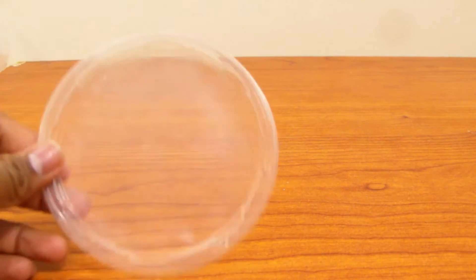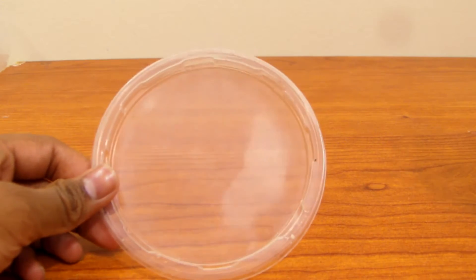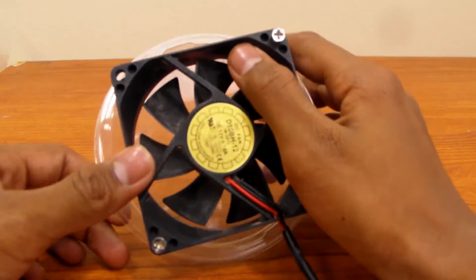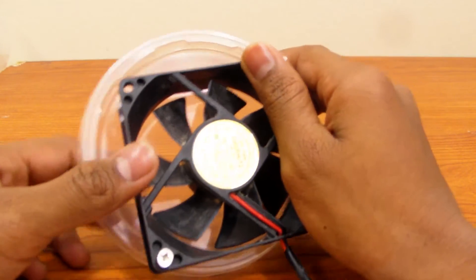First you're going to need the lid of the container and then you're going to put your fan on top, trace it, and then cut it out. I'll be back when I'm done that.